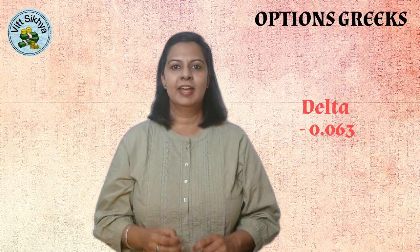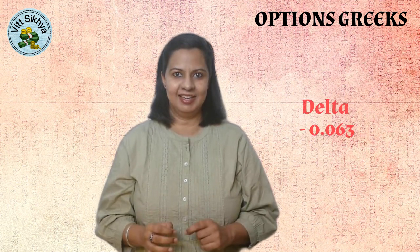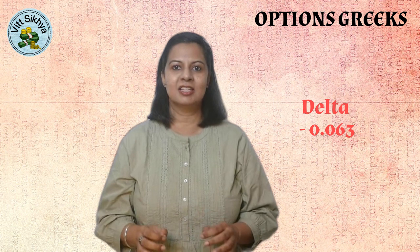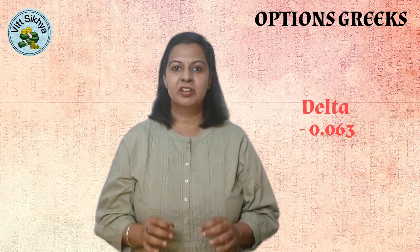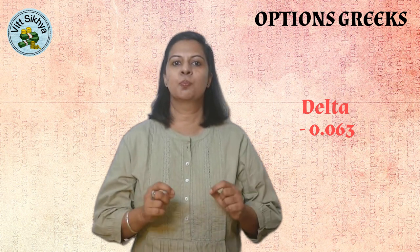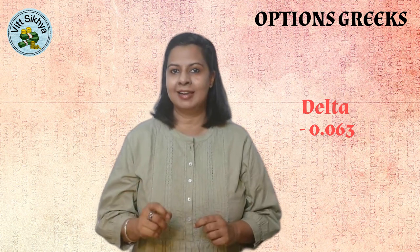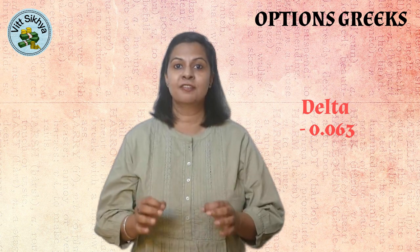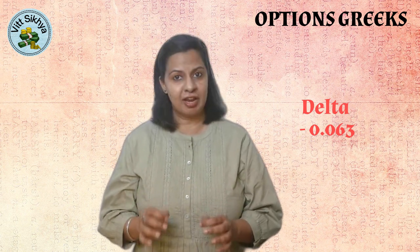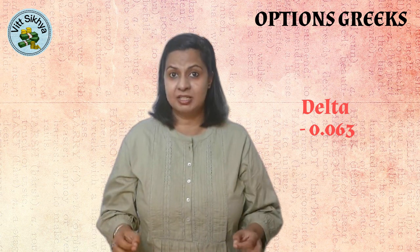The delta of negative 0.063 indicates that the option price will decrease by Rs. 0.063 for every Rs. 1 increase in the underlying stock price. This is because a put option gives the holder the right to sell the stock at the strike price, so a higher stock price makes the option less valuable.